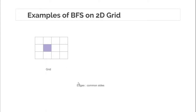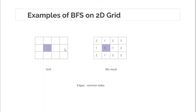If you apply BFS from the source cell, assuming you can only move up, down, left, and right — that means you can only move to a cell sharing a common edge — then the BFS result would look like this. The source cell is at distance 0. All cells reachable in one step are at distance 1. Cells at distance 2 require two steps, and these cells are at distance 3 because the minimum number of steps from source to reach them is 3.